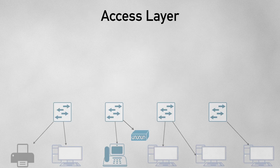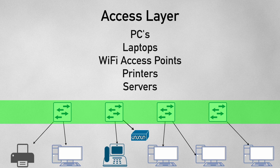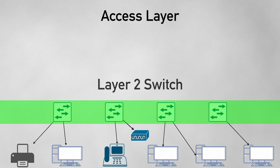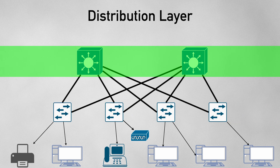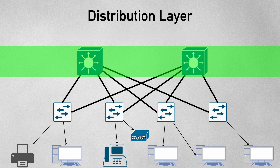The access layer switch is the connection to the end user or host devices — PCs, laptops, Wi-Fi access points, printers, servers, and so on. It's where we associate devices into VLANs and power devices with PoE, such as access points and SIP phones. Access layer switches are usually just a Layer 2 switch. These access layer switches then connect to distribution layer switches, which is an intermediate point between the access layer and the core layer, aggregating multiple access layer switches. This is where the first point of redundancy lies — these could be Layer 2 switches or a multi-layer switch depending on project requirements and cost.